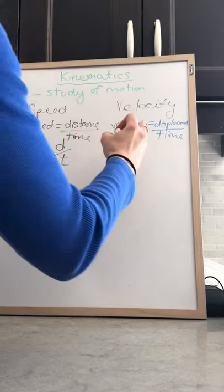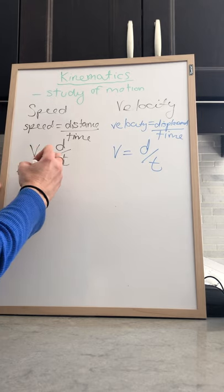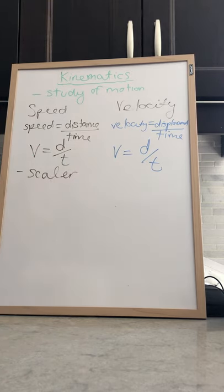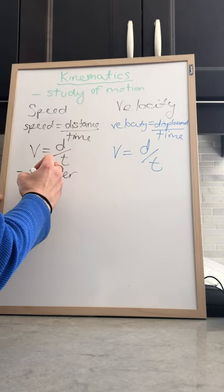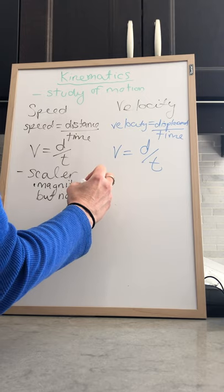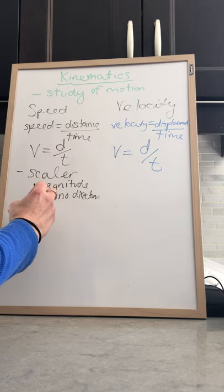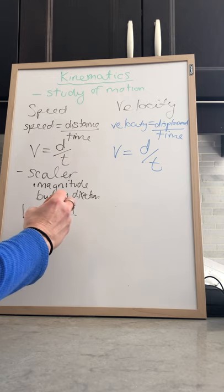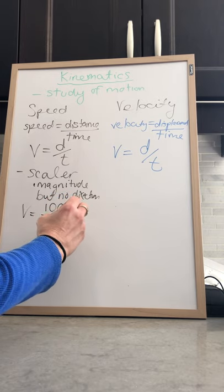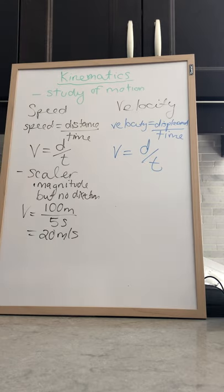Velocity actually uses the same symbols in the formula, but here is where it differs. Speed is what we call a scalar quantity. Scalar means that it has magnitude but no direction. For example, if a car goes 100 meters in five seconds, the speed would be 20 meters per second.